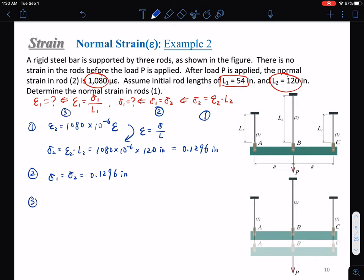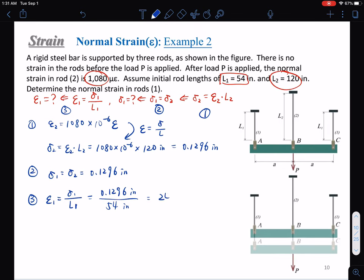In the last step, step three, epsilon one equals delta one over L one, which is 0.1296 inches over 54 inches, giving us 2400 microstrain.